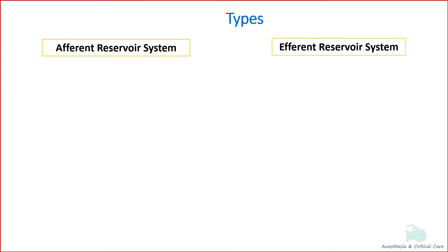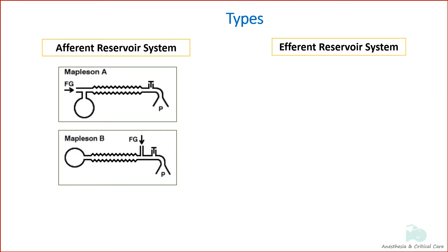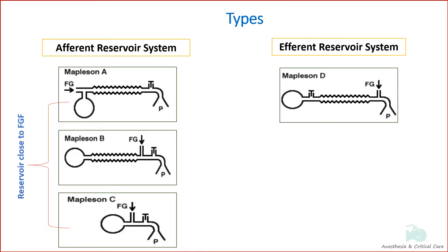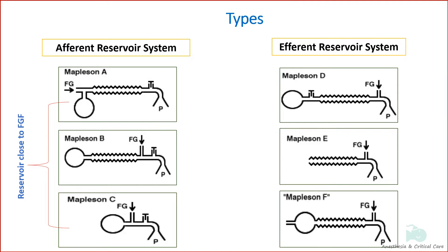If the reservoir is placed in the afferent limb, as in Mapleson A, B, and C, they are called afferent reservoir systems. If the reservoir is placed in the efferent limb, as in Mapleson D, E, and F, they are called efferent reservoir systems.